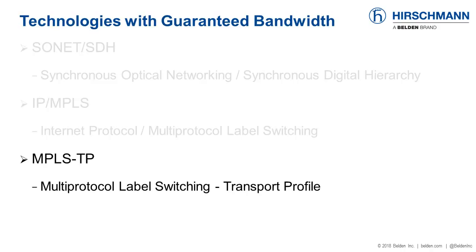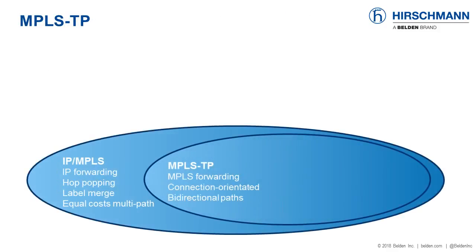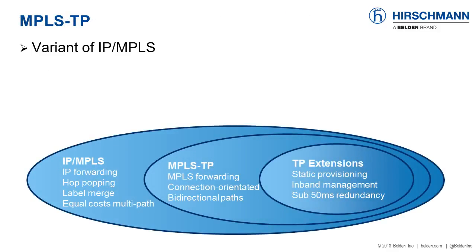There's a third, relatively new option known as Multi-Protocol Label Switching Transport Profile. Here is a high-level overview of MPLS-TP. MPLS-TP is a simplified version of IP MPLS — it uses a subset of the features found in IP MPLS plus some additional features. These include in-band network configuration and management, static network provisioning, and bi-directional communication paths. Basically, these additional features make MPLS-TP an ideal protocol for an industrial network backbone.